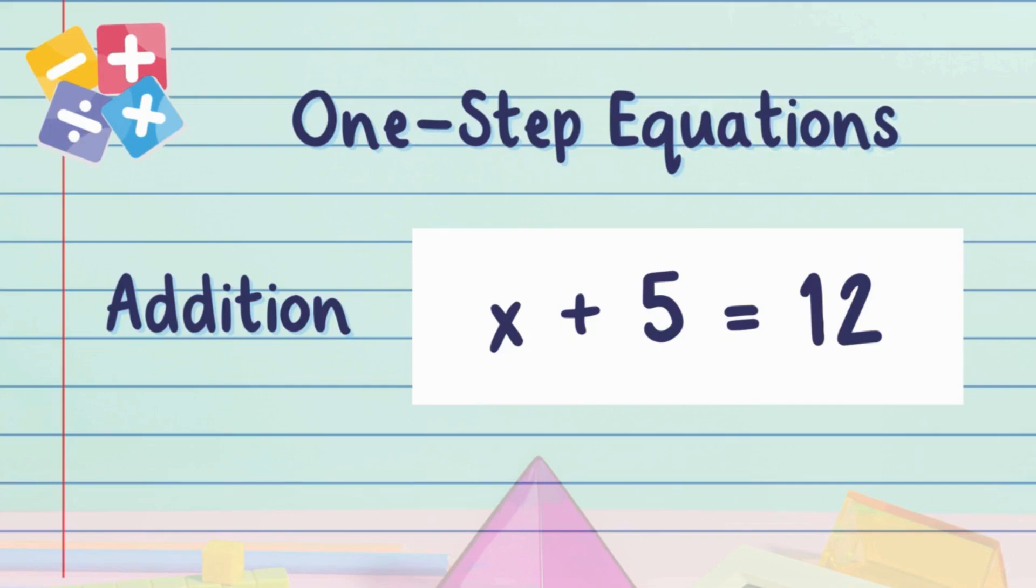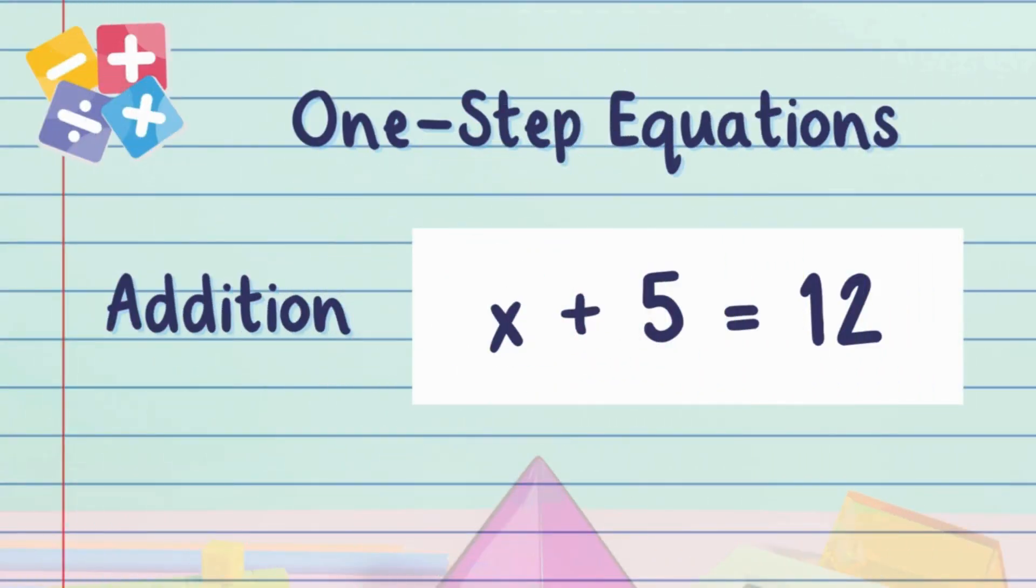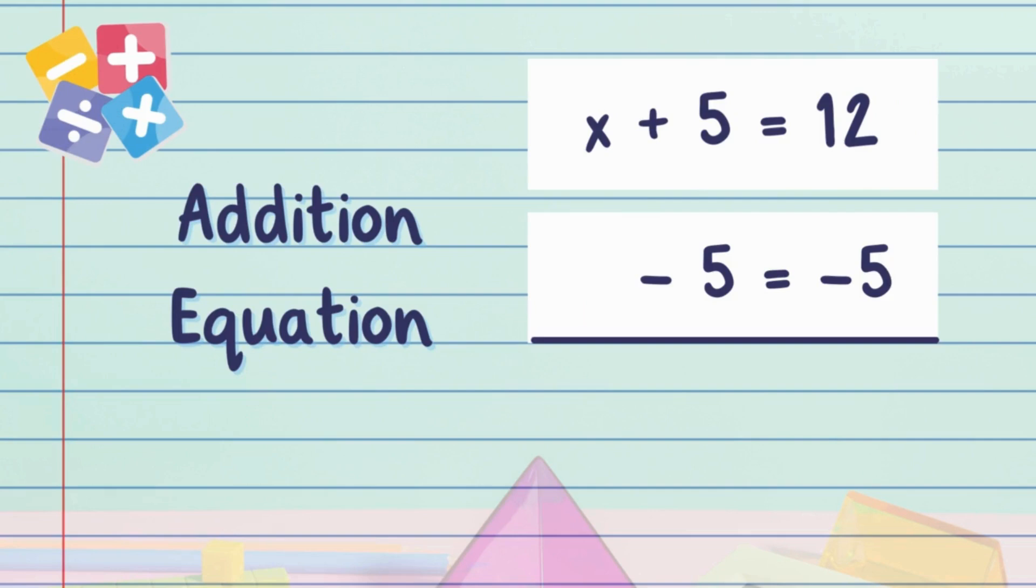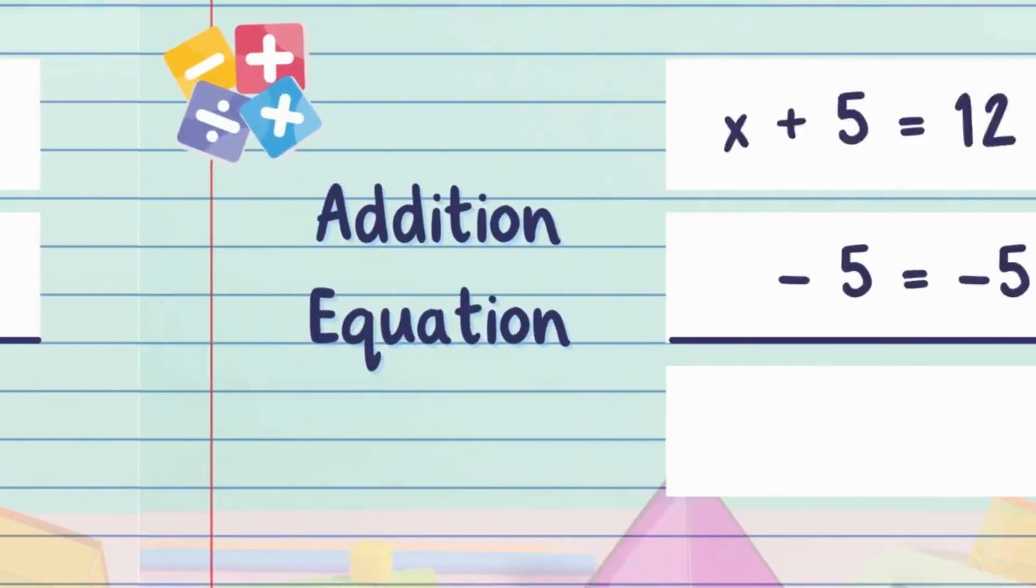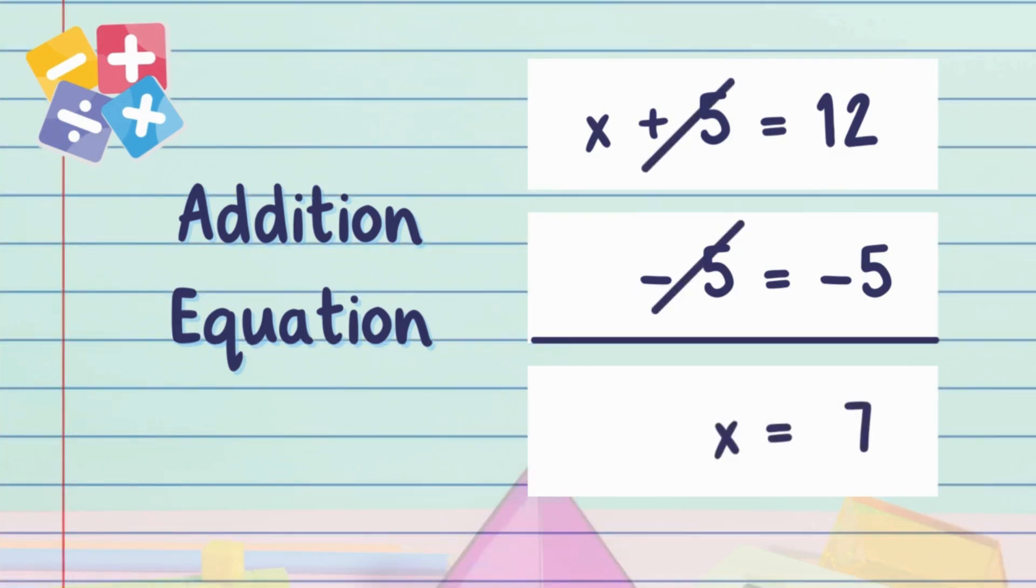The goal is to get x all by itself. How do we do that? We need to get rid of the plus 5. What's the opposite, or the inverse, of adding 5? That's right—the opposite of adding 5 is subtracting 5. So we'll subtract 5 from both sides of the equation. When we subtract 5 from both sides, we're left with x = 7.